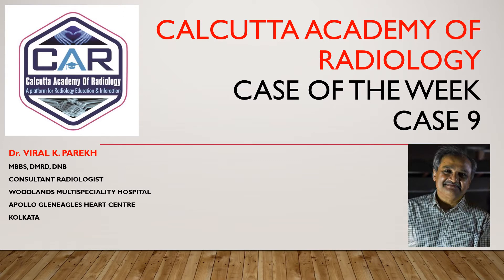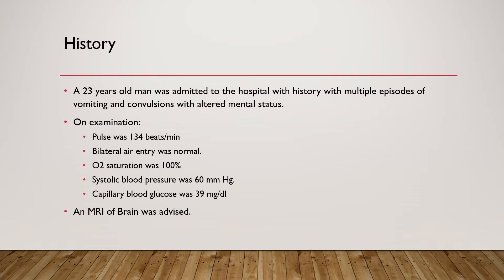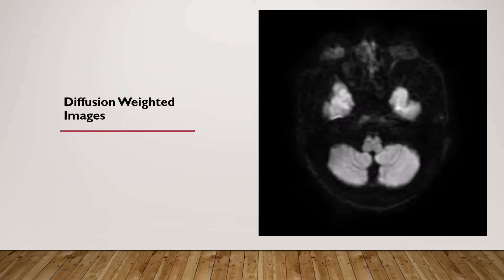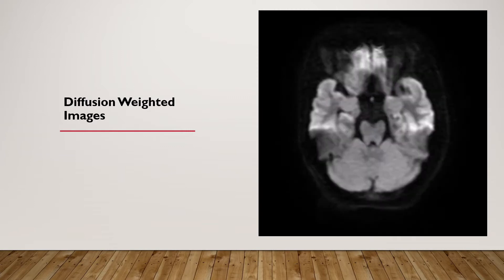Here is a 23-year-old man admitted to the hospital with history of multiple episodes of vomiting and convulsions with altered sensorium. On examination, the pulse was 134 beats per minute, bilateral air entry was normal, oxygen saturation was 100%, systolic blood pressure was 60 mmHg, and capillary blood glucose was 39 mg per 100 ml. An MRI of brain was advised.